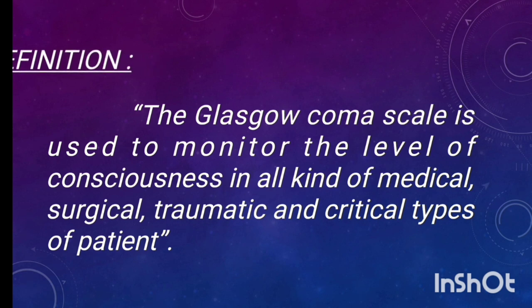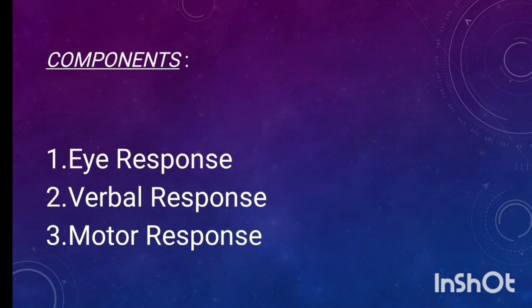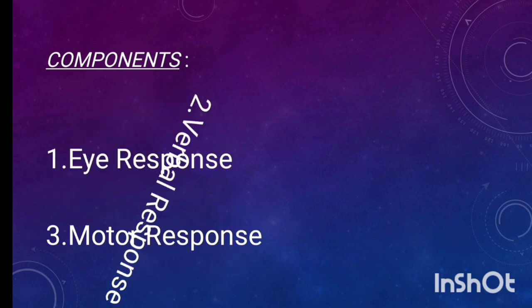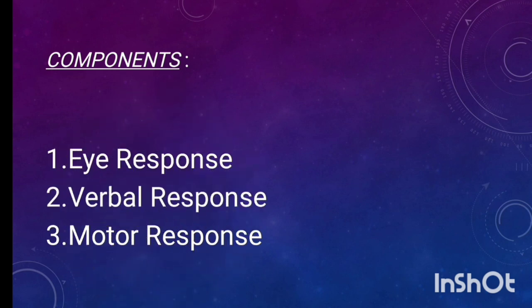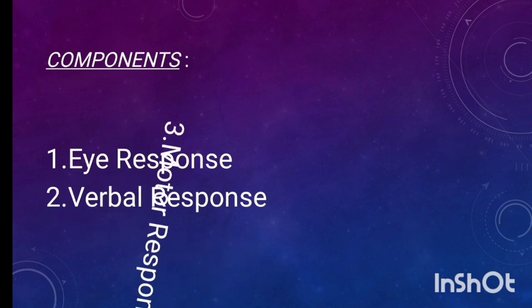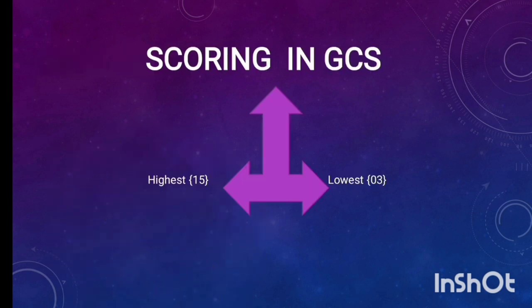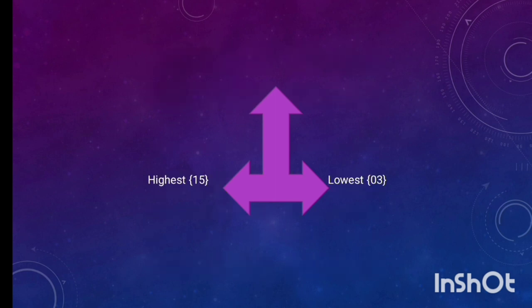Next are the components. First one is eye opening response, second one is verbal response, the third one is motor response. Then we will see the scoring in GCS. First one is highest, 15, which means the patient will be alert or awake in better condition. The second one is lowest with score 3, which means the patient will be in the highest rate of deep coma.